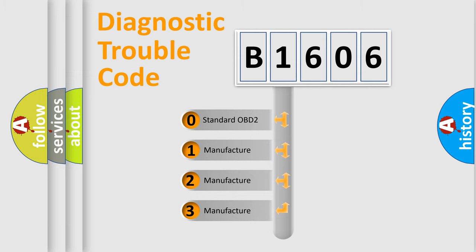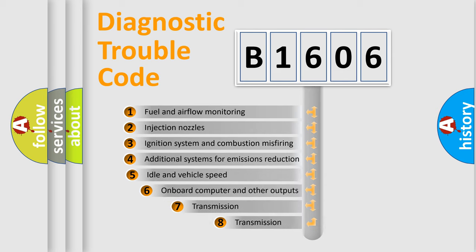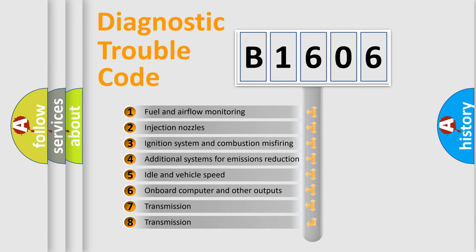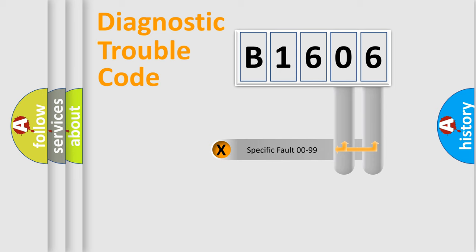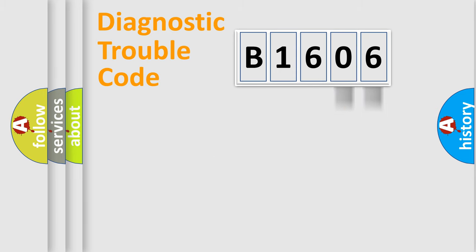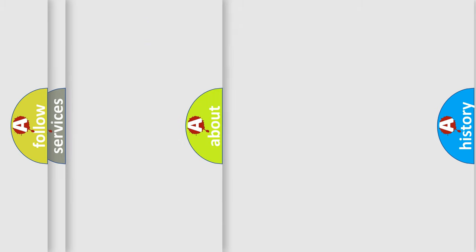If the second character is expressed as zero, it is a standardized error. In the case of numbers 1, 2, or 3, it is a more specific expression of a car-specific error. The third character specifies a subset of errors. This distribution is valid only for the standardized DTC code. Only the last two characters define the specific fault of the group, and such a division is valid only if the second character is expressed by the number zero.